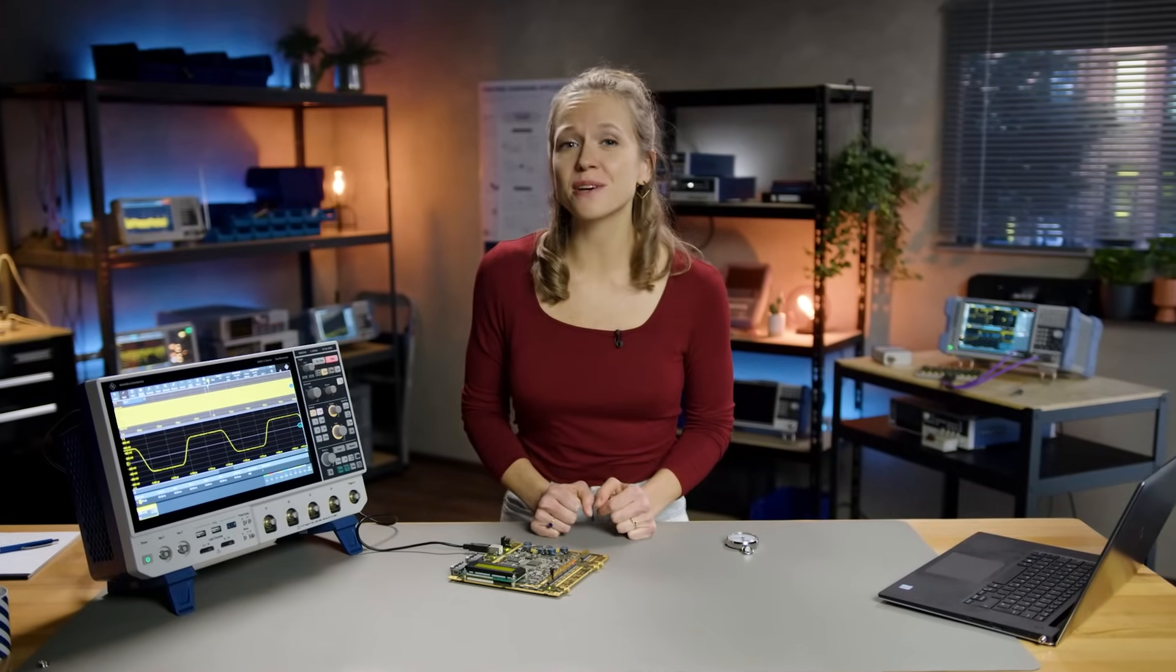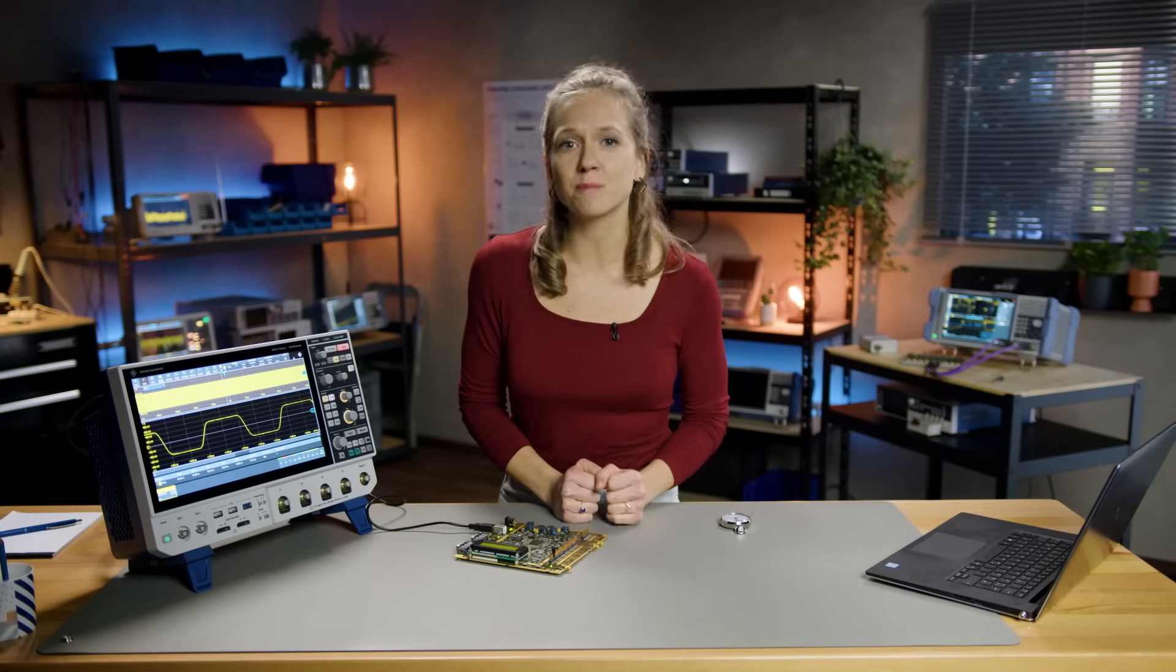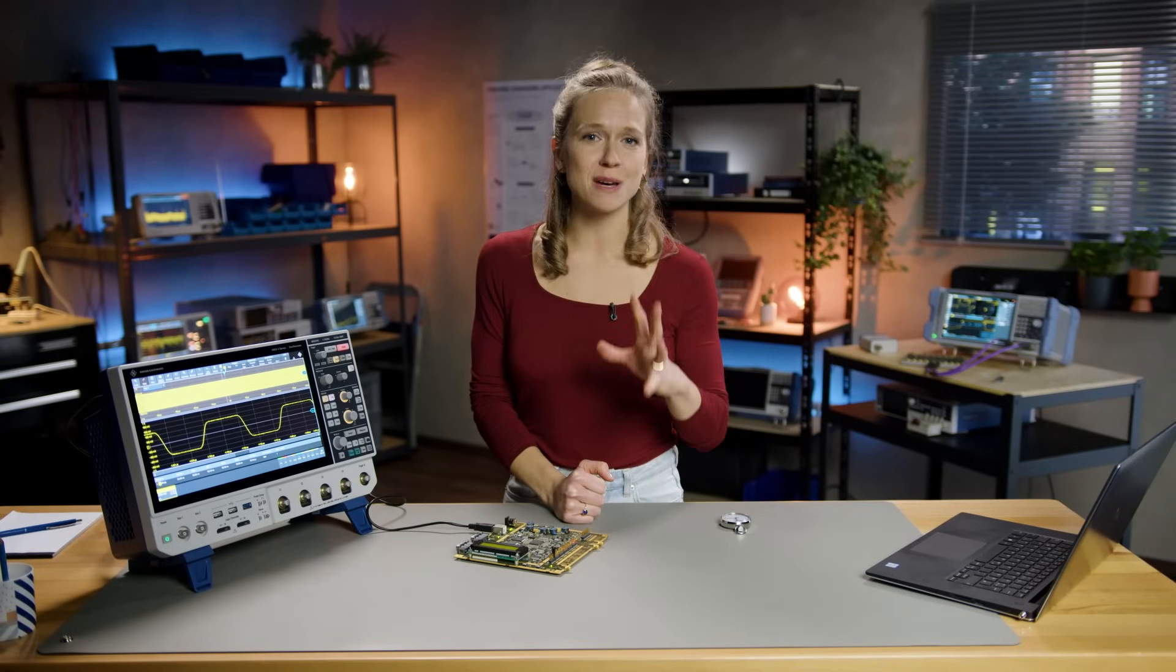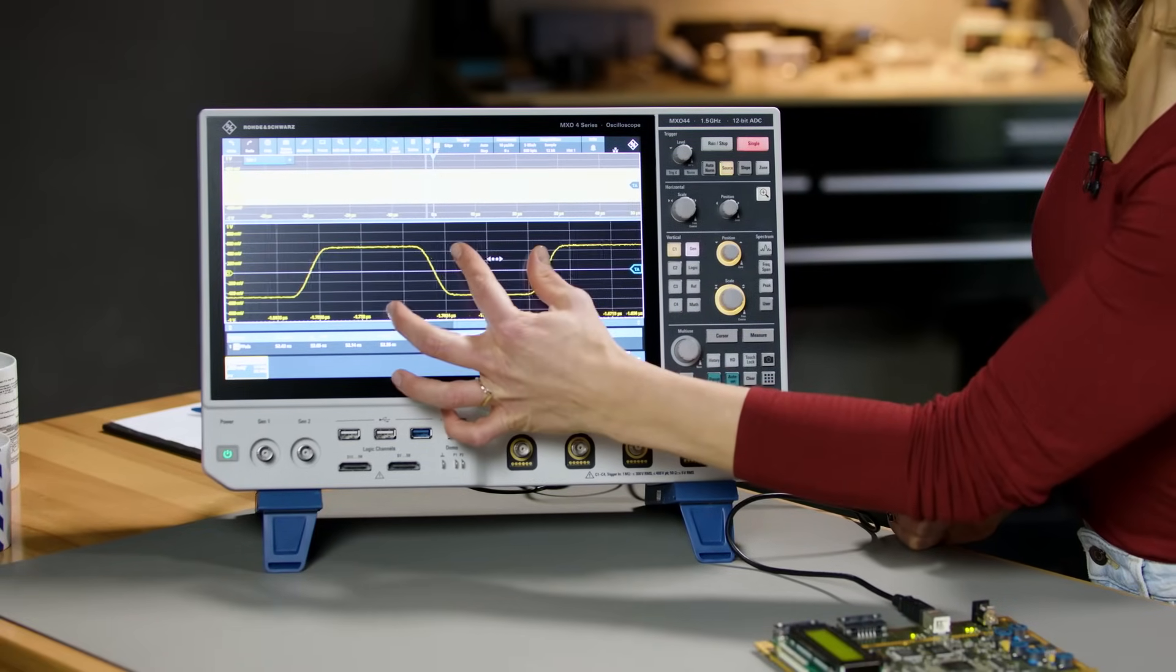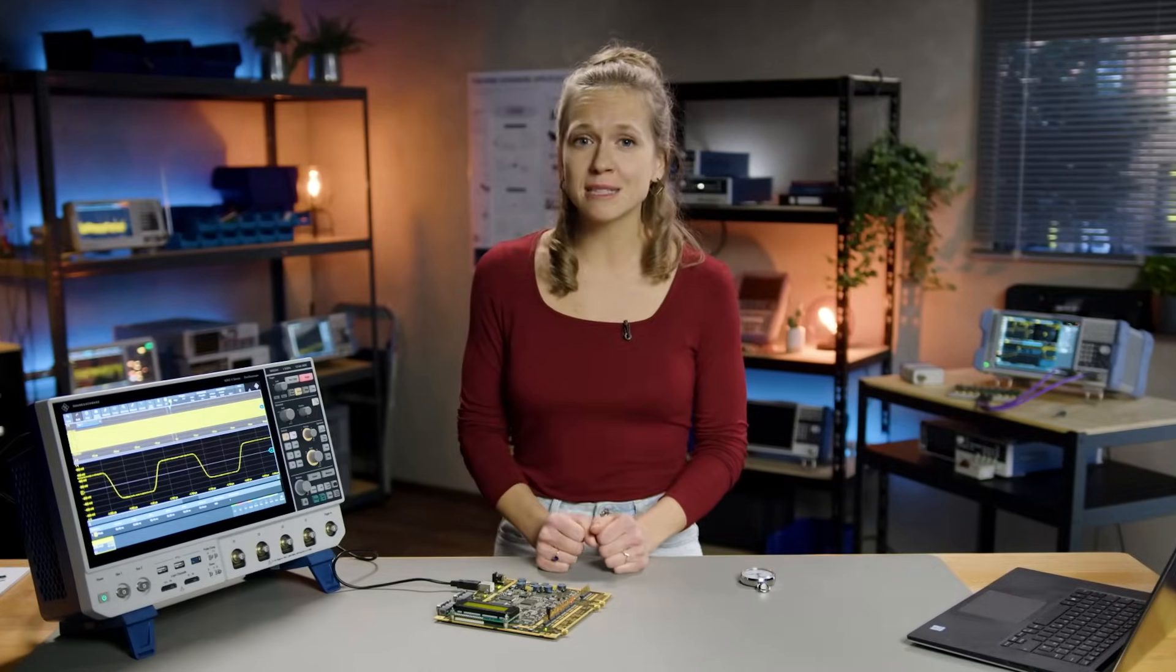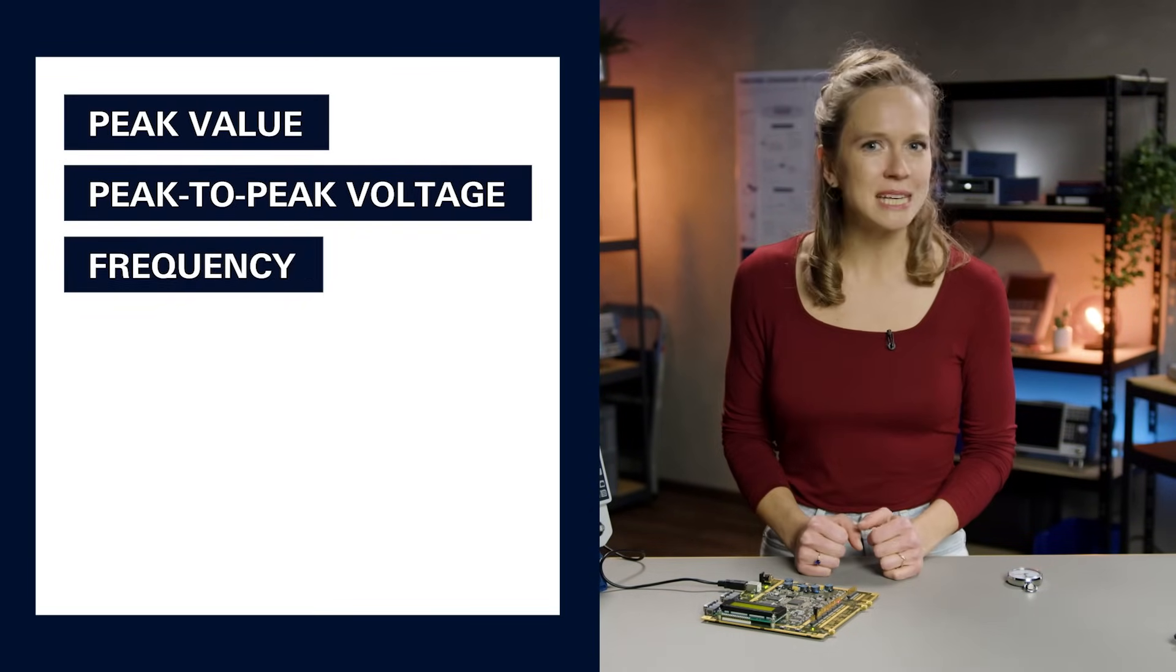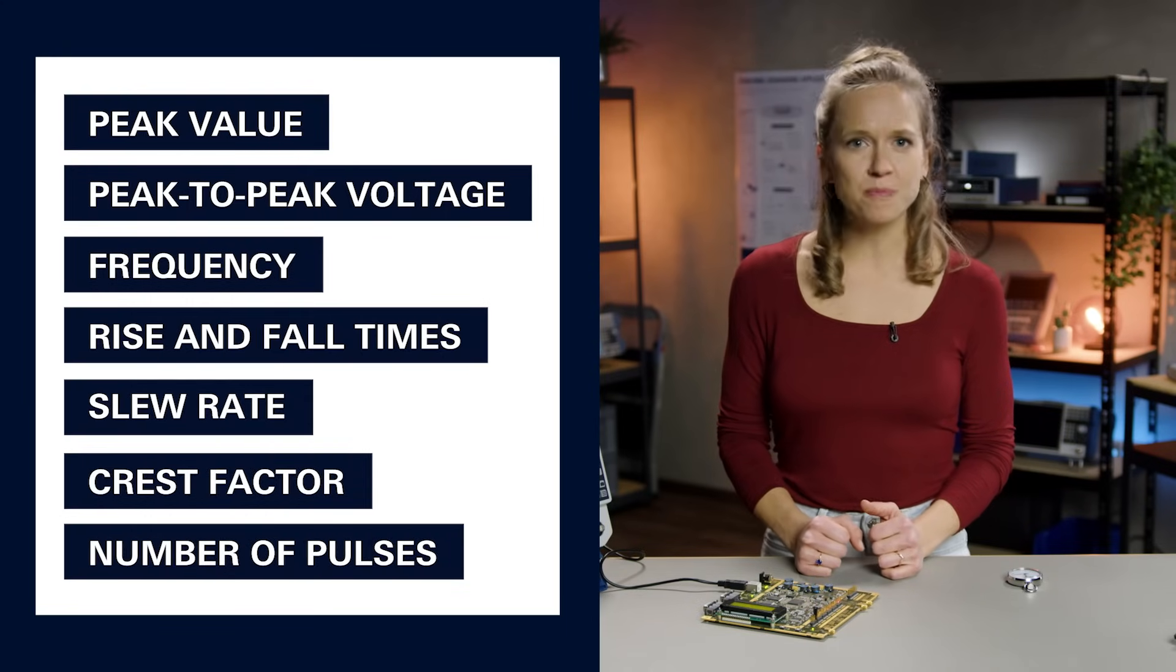It's important to emphasize how digital display systems on oscilloscopes simplify making measurements. Modern digital oscilloscopes offer many display and measurement functions such as zooming into and out from a signal with cursors or markers to make manual measurements. In addition, a large number of automated functions such as peak value or peak-to-peak voltage, frequency, rise and fall times, slew rate, crest factor and a number of pulses are available.